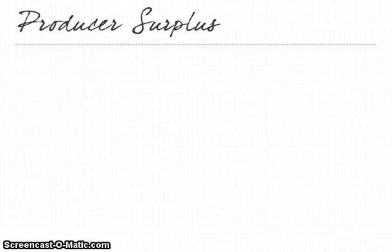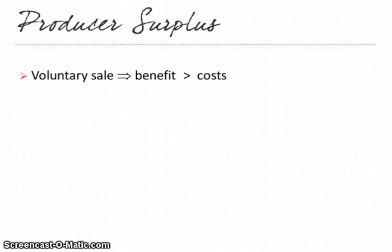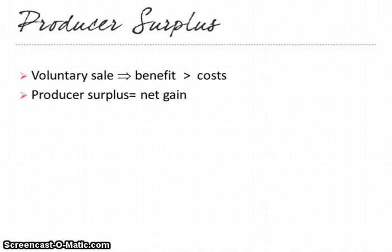Now let's talk about producer surplus. From the producer's point of view, a producer is not going to sell a product unless the producer believes that their benefits are greater than the cost of the sale. Producer surplus is the net gain that the producer is attaining by making the sale — the same concept as consumer surplus but from the producer's perspective.